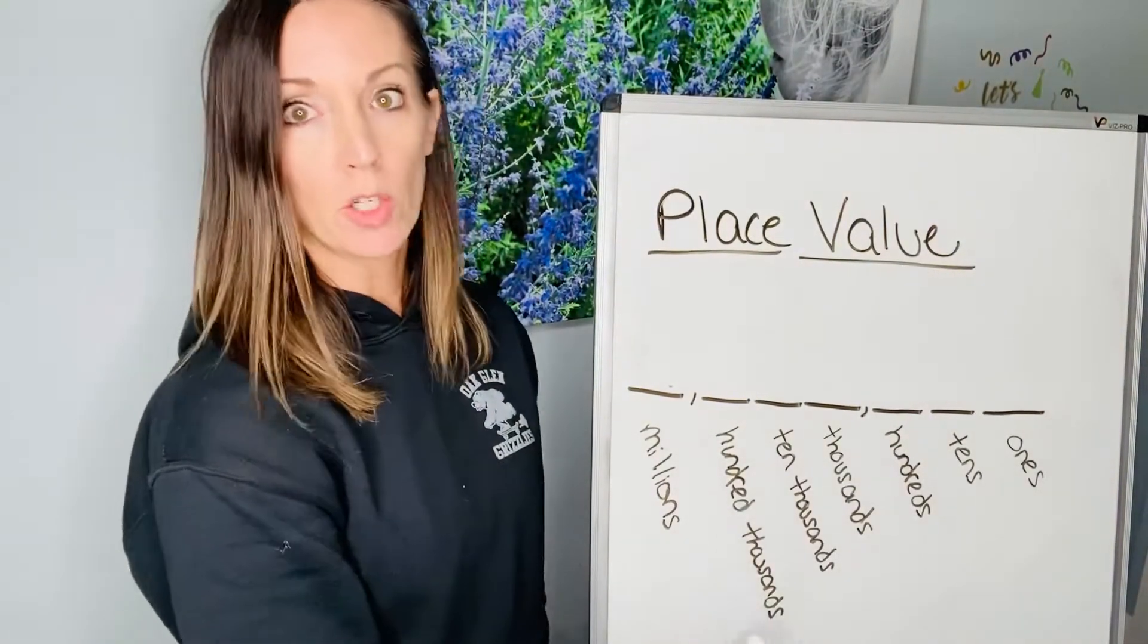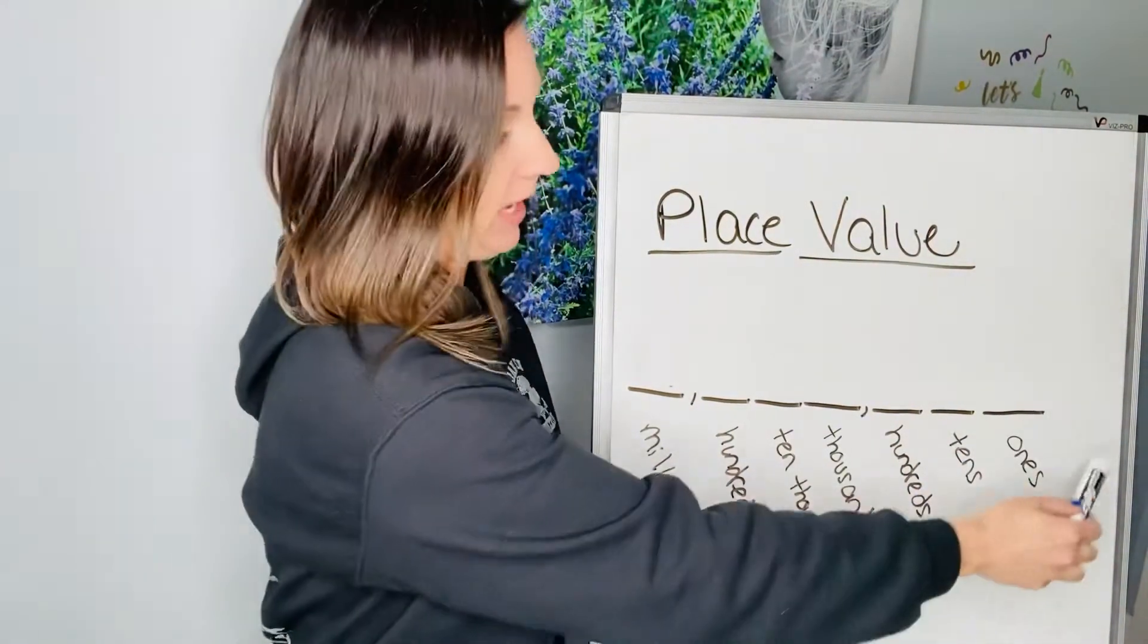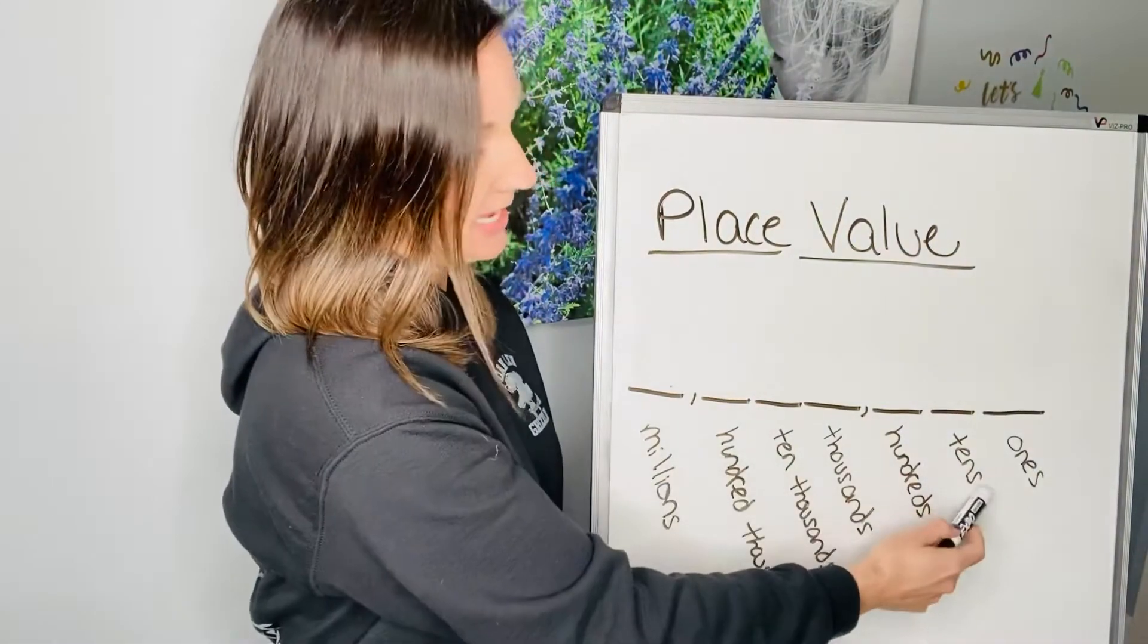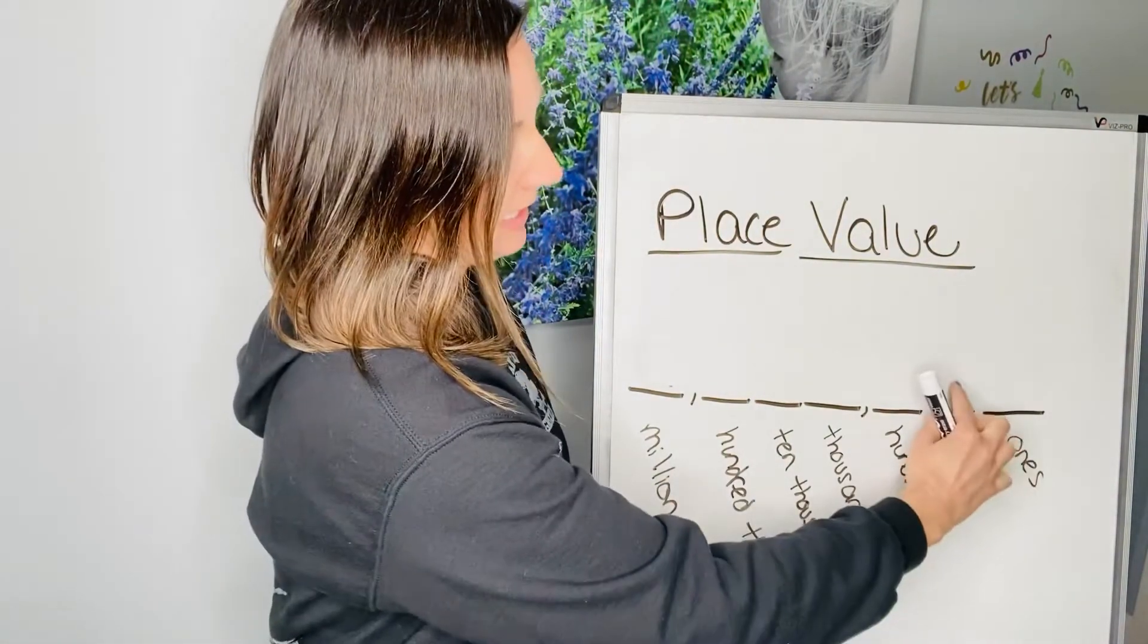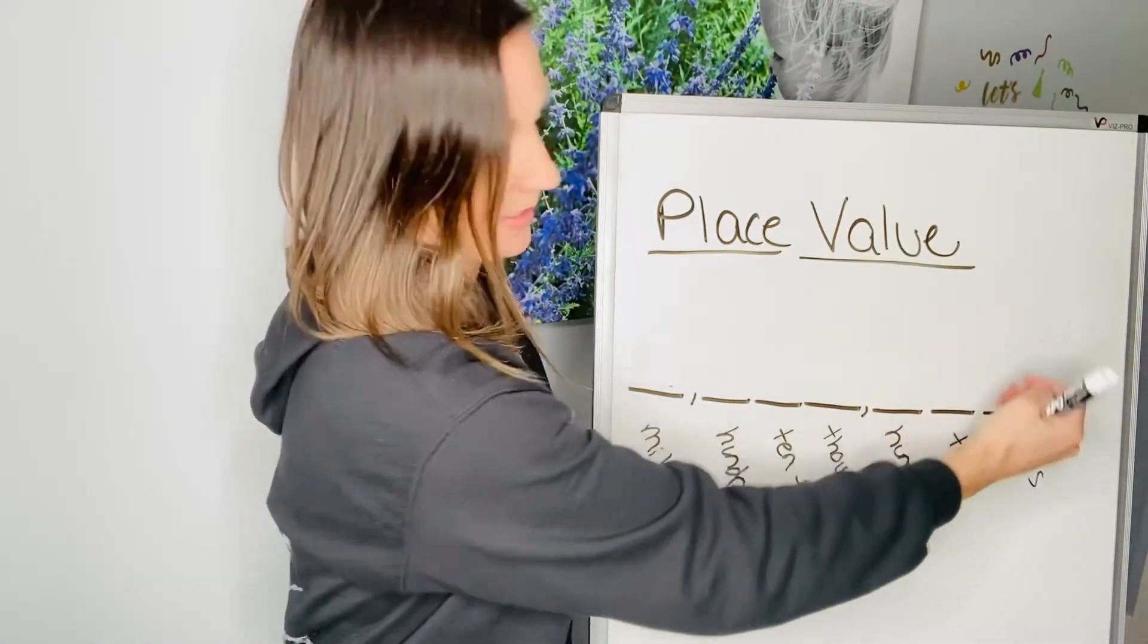So I'm going to go in order. We're just going to go from ones to millions. Ones is the smallest in place value before the decimal point that we're going to talk about today. Then tens. This would be ten, one zero. This would be the tens place, one ten zero.